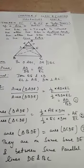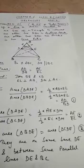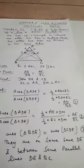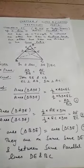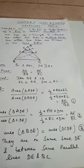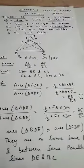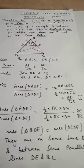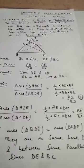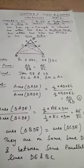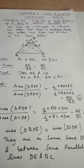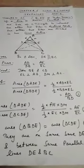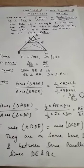We get two results. First: area of ADE by area of BDE equals AD by BD. Second: area of ADE by area of CDE equals AE by EC. Triangles BDE and CDE are equal in area because they share the common base DE and lie between the same parallel lines DE and BC. So area of triangle BDE equals area of triangle CDE.